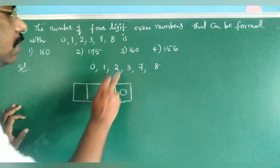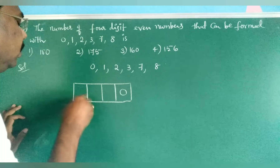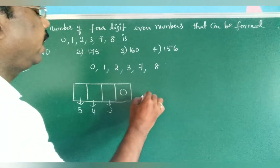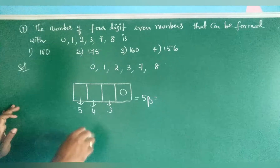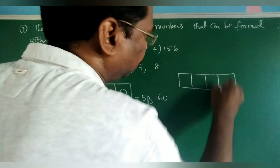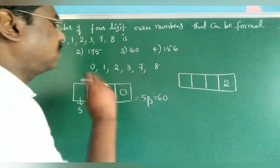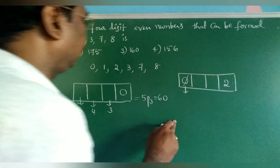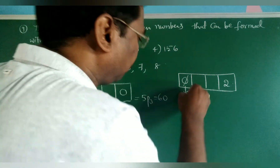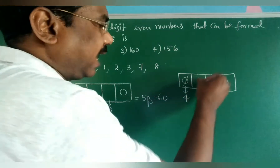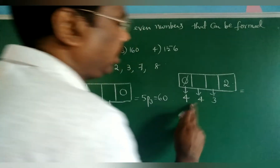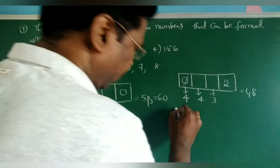Case 1: unit place filled with 0. There are 5 remaining digits for the other 3 places. First place: 5 ways, second: 4 ways, third: 3 ways — giving 5P3 = 60 arrangements. Case 2: unit place filled with 2. Excluding 0 and 2, 4 digits remain for the first place (4 ways), second place including 0: 4 ways, third: 3 ways — giving 4 × 4 × 3 = 48.